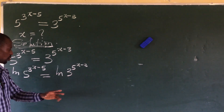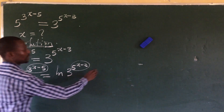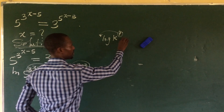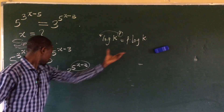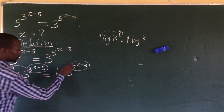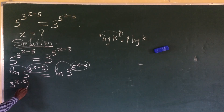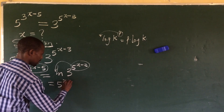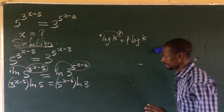Now we can apply the law of logarithm. We're considering the whole exponent. According to the law of logarithm, if you have log of k to the power of p, you move the exponent to the front: p times log k. Applying this law here, we move the exponent back and get: 3 to the power of x minus 5, in brackets, times ln of 5, equals 5 to the power of x minus 3, in brackets, times ln of 3.